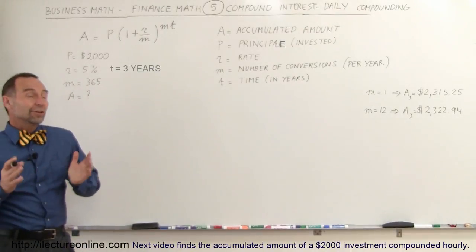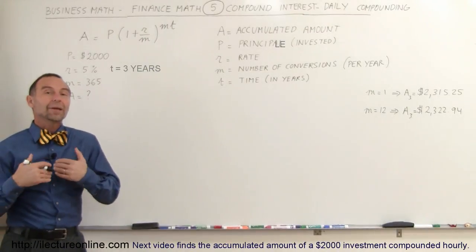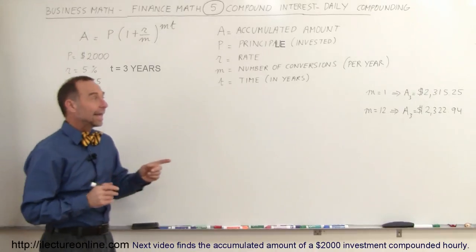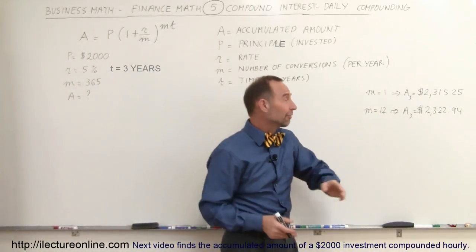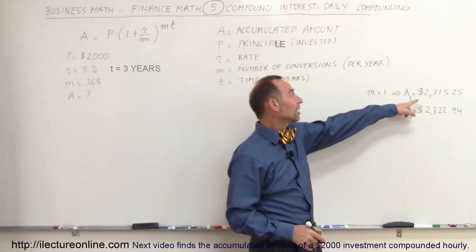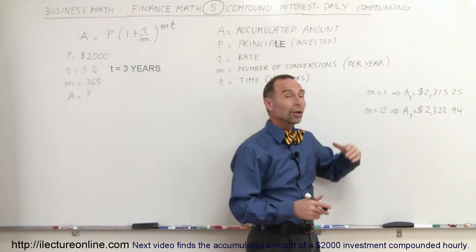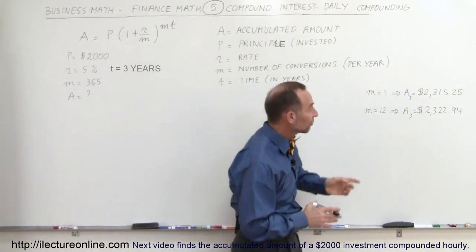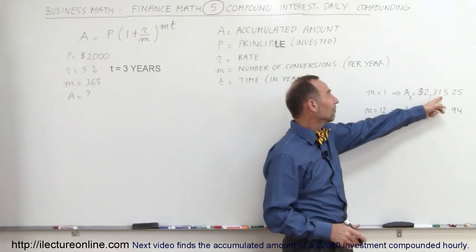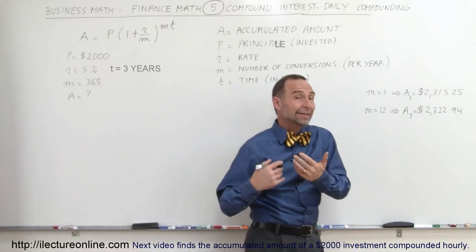Welcome to ElectronLine. In the previous several videos we showed you how compound interest works. In the case that we compounded yearly on a three-year investment with $2,000 invested, 5% interest rate, the amount accumulated is $2,315.25. So the amount of interest earned would be $315.25 compounded yearly.